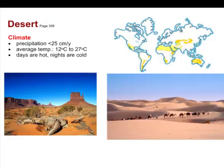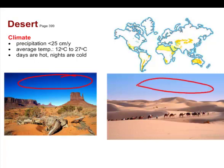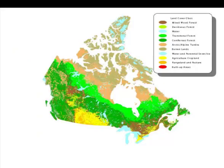Deserts have very low precipitation. Their days can be incredibly hot as they absorb a lot of radiation, but nights can be very cold. This is because deserts often have very clear skies — as seen in Monument Valley, Arizona, and the Sahara — with very little cloud cover to reflect heat back, so heat radiates away from the surface rapidly at night.